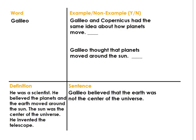The next word is another person — his name is Galileo. Say it three times: Galileo, Galileo, Galileo. Let's read the definition: He was a scientist. He believed the planets and the earth moved around the sun — the sun was the center of the universe. He also invented the telescope.